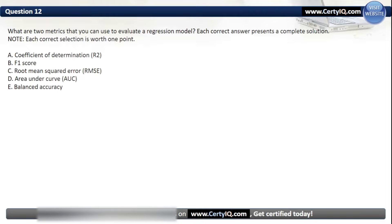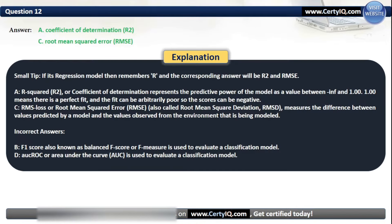Question 12. What are two metrics that you can use to evaluate a regression model? Options: A. Coefficient of Determination, B. F1 score, C. Root mean squared error, D. Area under curve, or E. Balanced accuracy. The correct options are A and C. A tip: if it's a regression model, remember R — the answers are R² and RMSE. R squared, or Coefficient of Determination, represents the predictive power of the model as a value between negative infinity and 1, where 1 means a perfect fit. Root mean squared error measures the difference between values predicted by a model and the values observed from the environment being modeled.